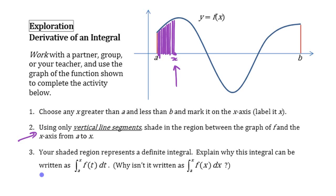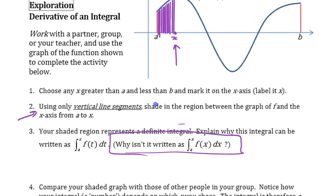Your shaded area represents a definite integral - that area represents the area from a up to x under this function f of t. Now this thing says here, why isn't it written as this? The reason is because the x is the specific value on the x-axis you picked - this is the specific value you happen to pick.